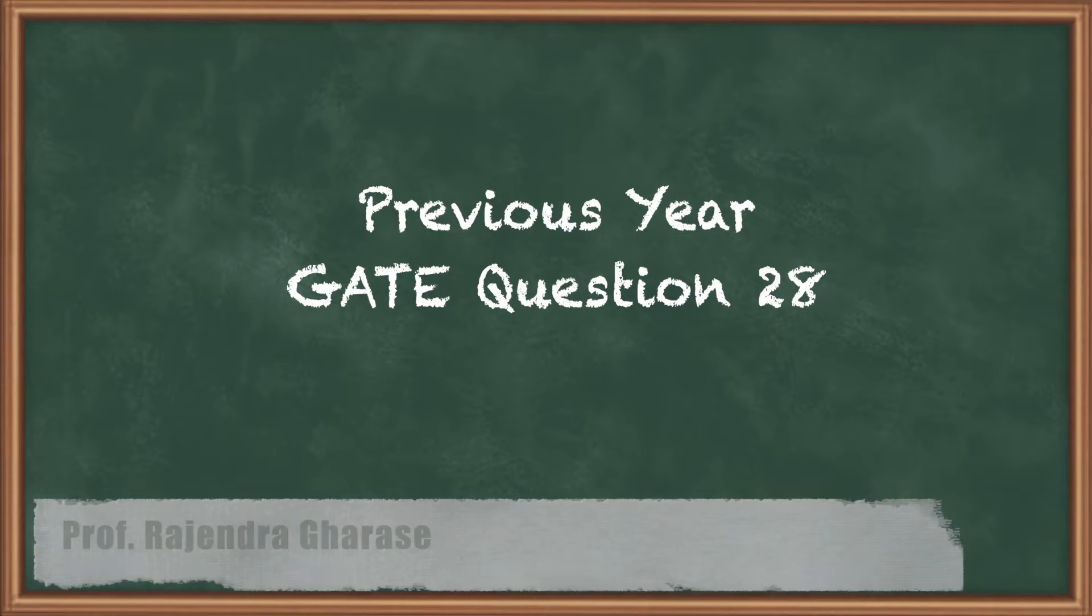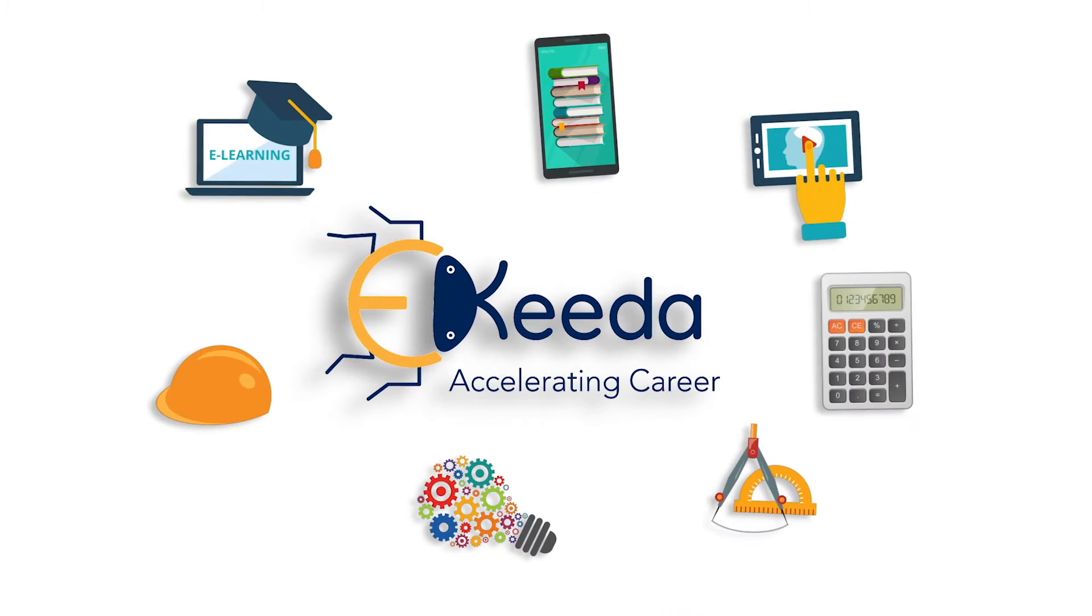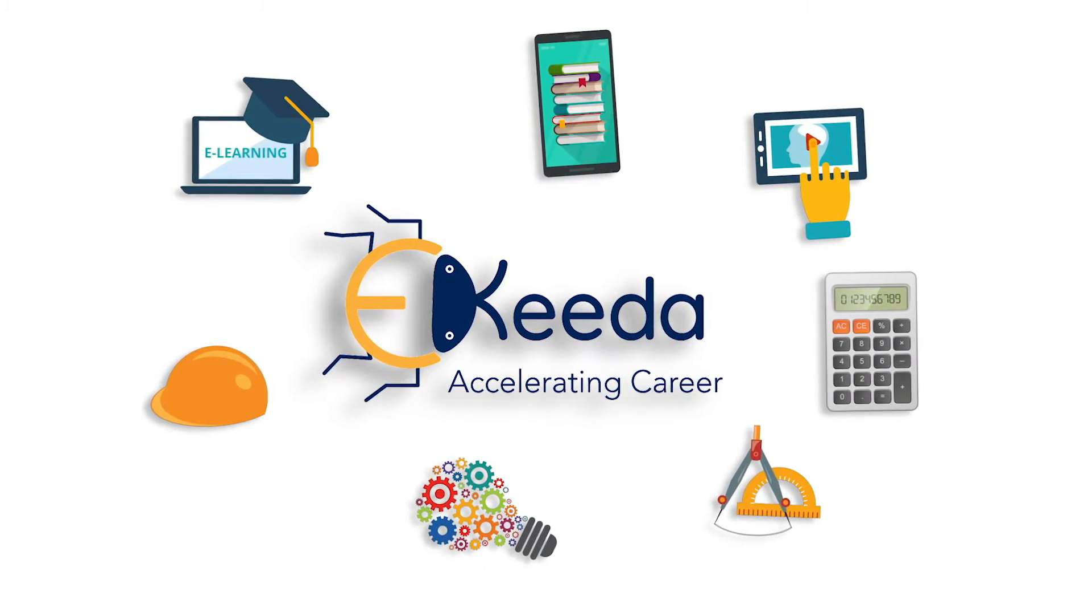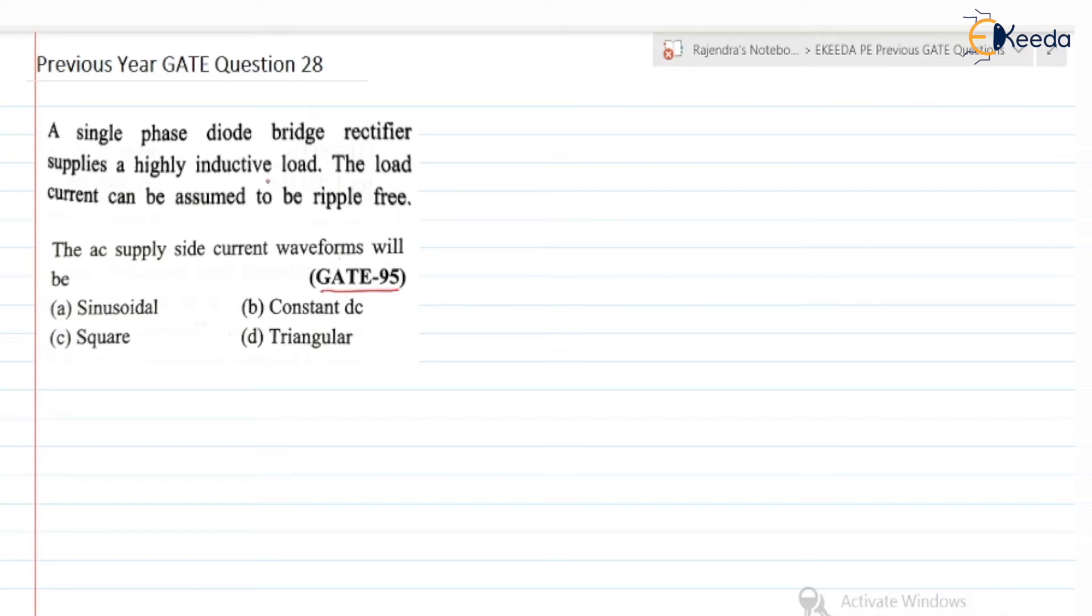Let us read the question. A single phase diode bridge rectifier supplies a highly inductive load, so load is highly inductive. The load current can be assumed to be ripple free. The AC supply side current waveforms will be, and they have given four options.